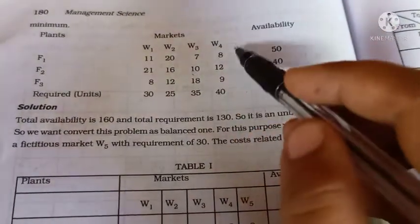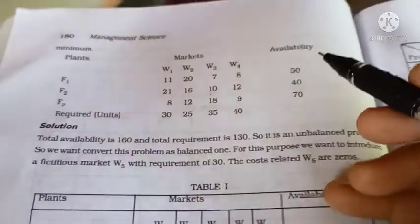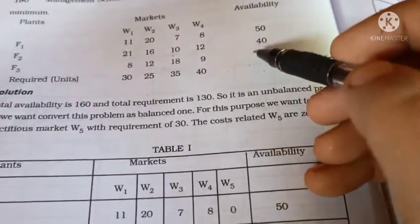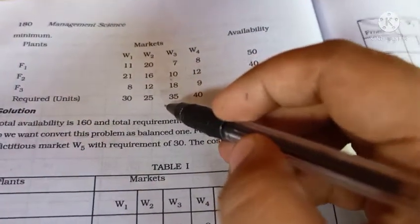In this case, we add a dummy column. When demand is less than supply, we add a dummy column.